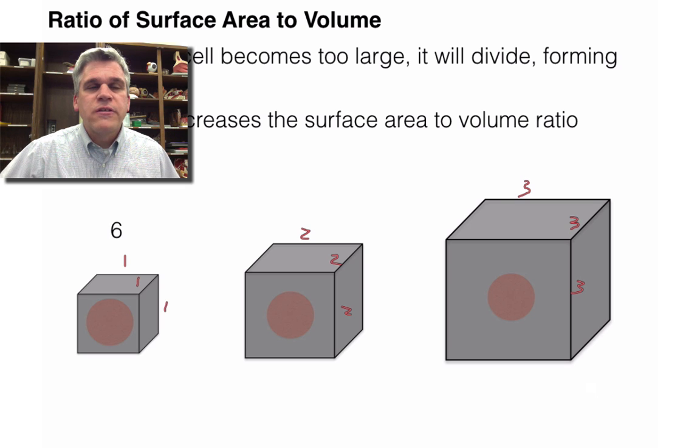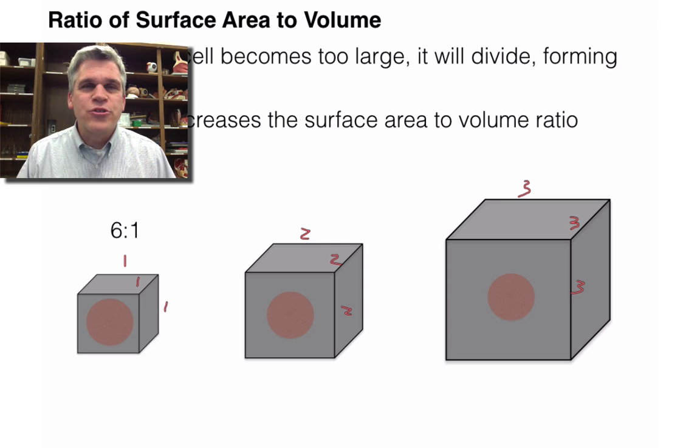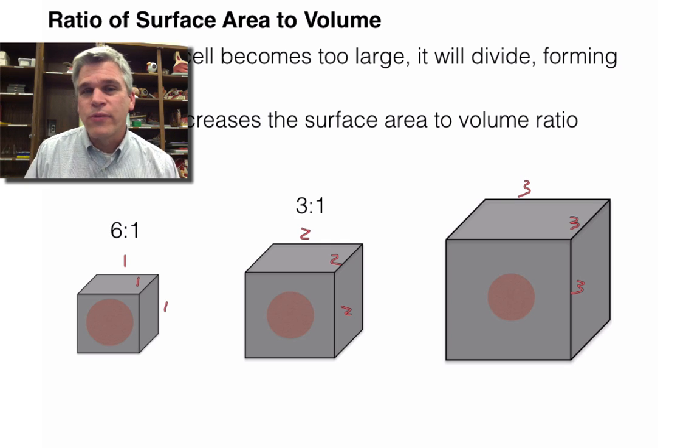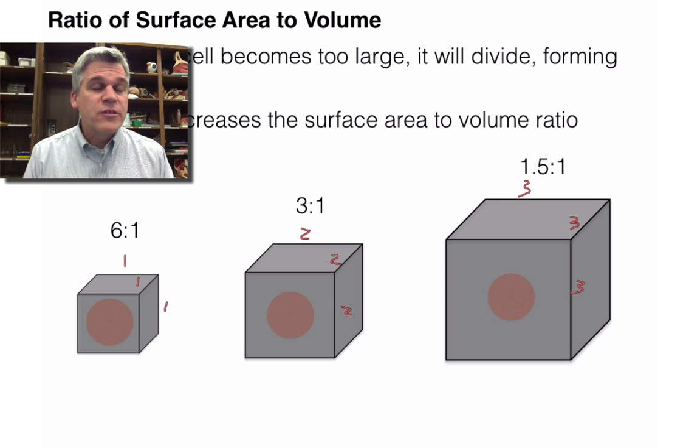So when we calculate the surface area to volume ratio, the small one, the 1 cubic centimeter side, has a 6 to 1 ratio. In other words, there's 6 times the surface area as there is to the volume. But if the cell gets larger, that goes down to a 3 to 1 ratio. The surface area is only 3 times larger than the volume. And as the cell gets even larger, that surface area to volume ratio goes down to 1.5 to 1.